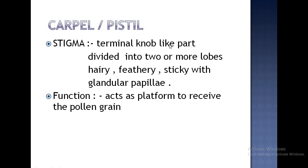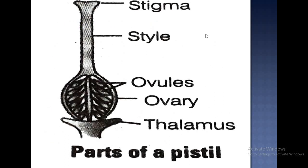The location of the stigma is the terminal portion of the carpel or pistil. Its function is to act as a landing platform to receive the pollen grain. Structurally, it has one or more lobes that are hairy, feathery, and sticky due to the presence of glandular papillae. It acts as a landing platform for the pollen grain during the process of pollination.